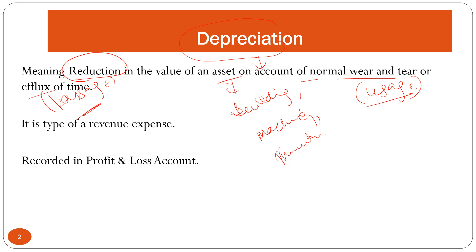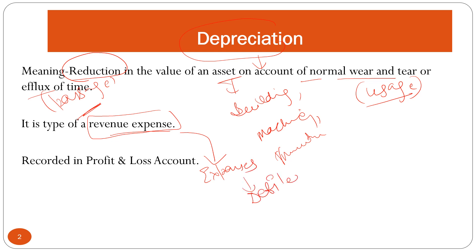Depreciation is a type of revenue expense. As we have already seen, all expenses will be debited — debit all expenses and credit all income. Depreciation, being a revenue expense, will be recorded on the debit side, or on the expense side, of the profit and loss account.